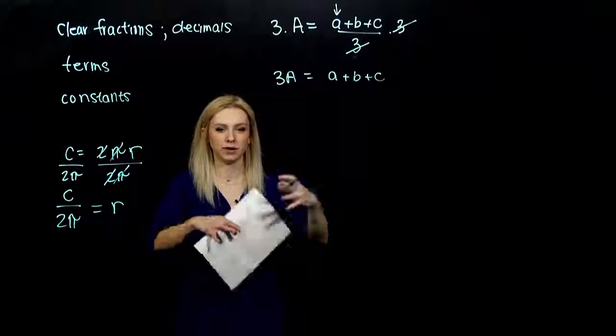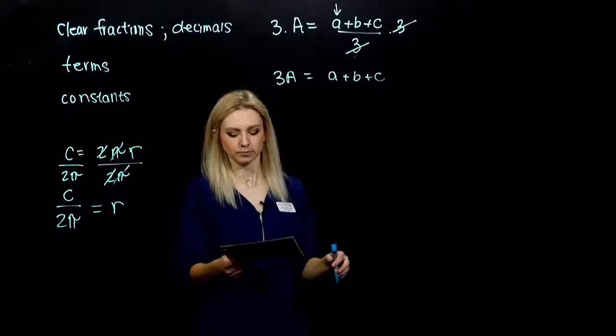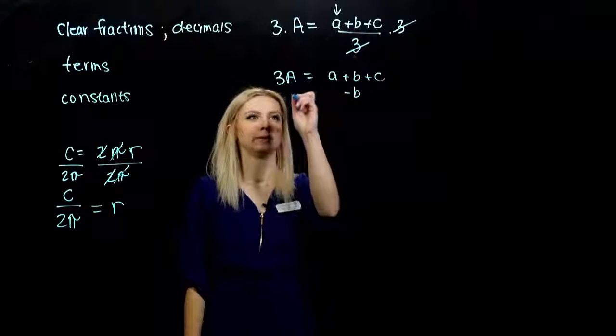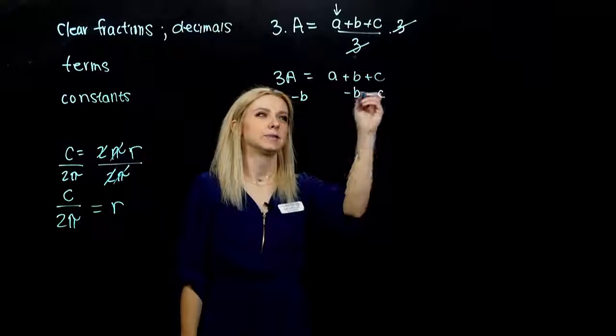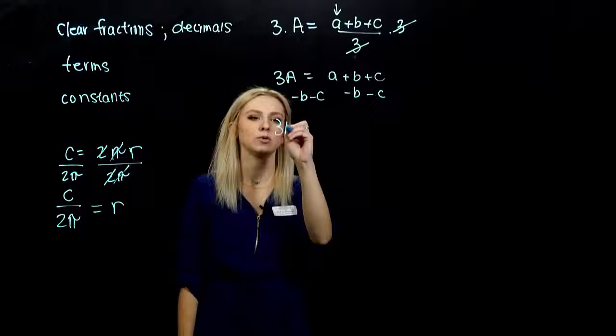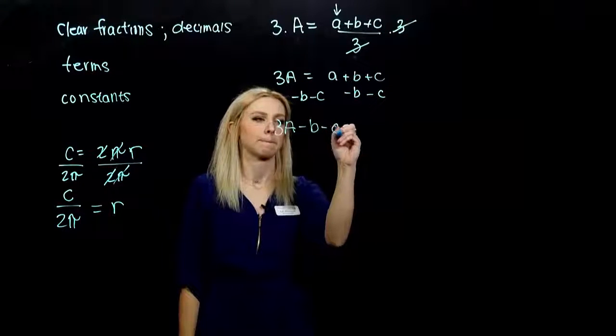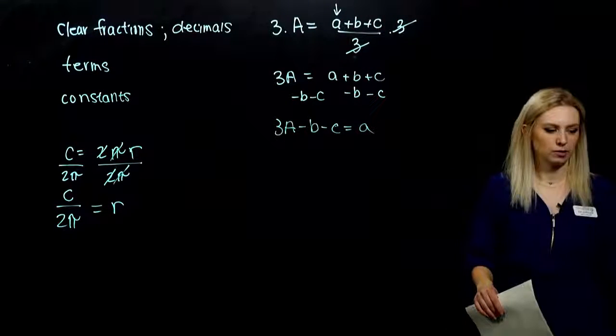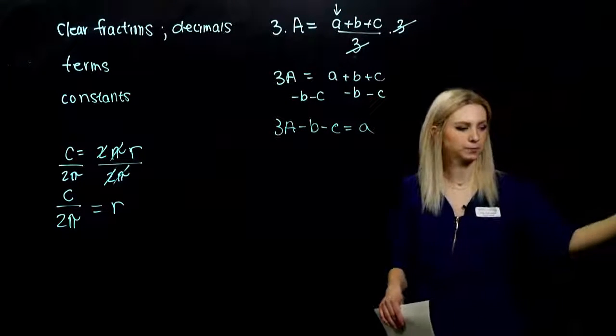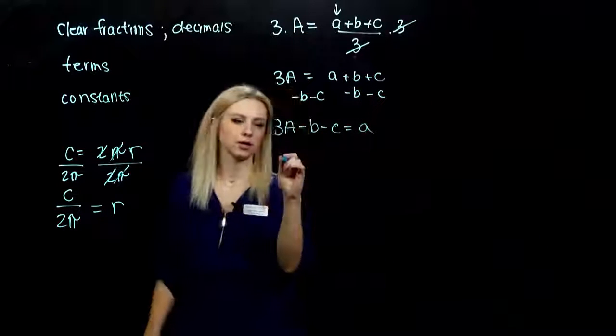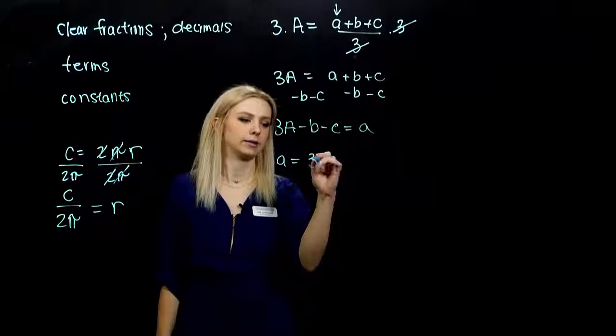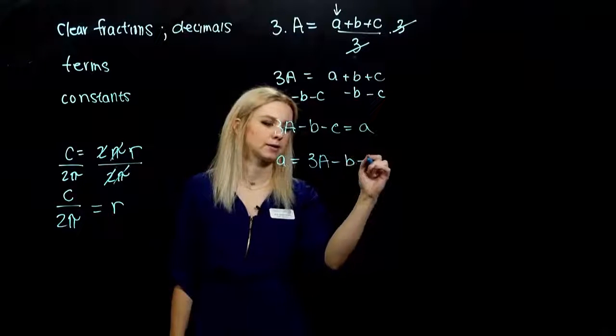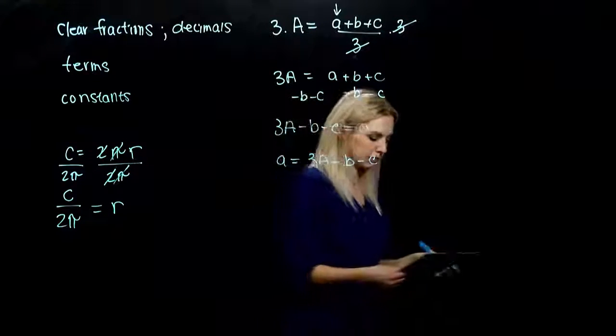So now we've dug out a from that fraction. We want a on its own, so we need to subtract b from both sides and subtract c. I'm just going to do it all in one step. And a is now isolated. And again, generally when we solve for some variable, we want to write that thing first because we like to read left to right. So little a is three times the average minus the second and third numbers.